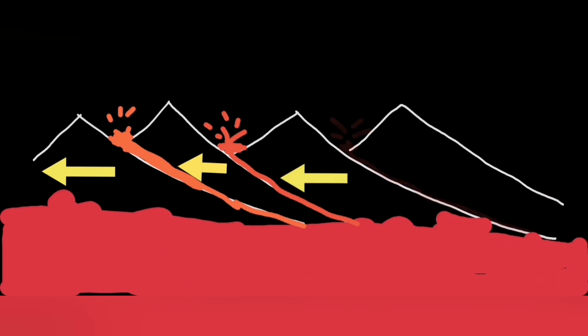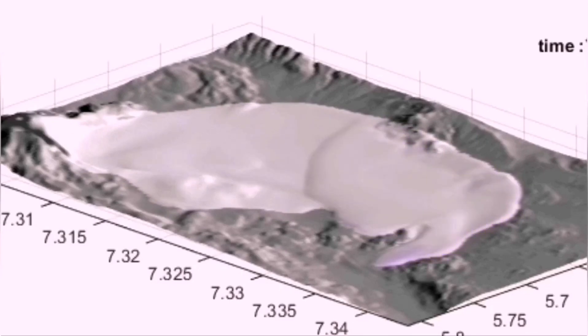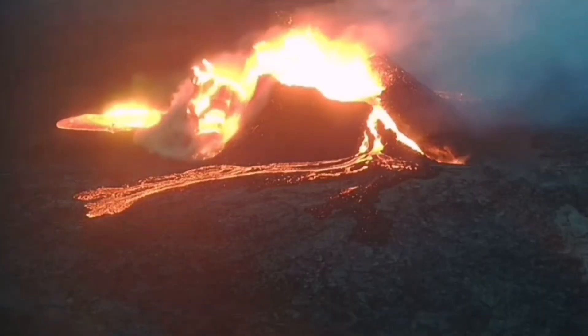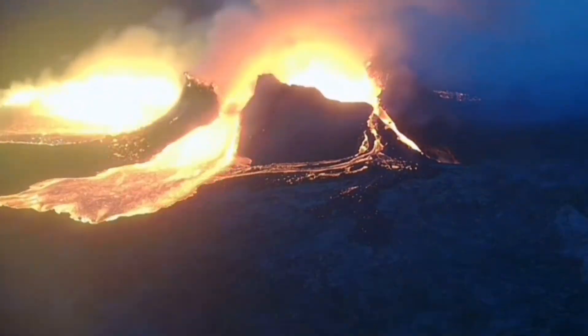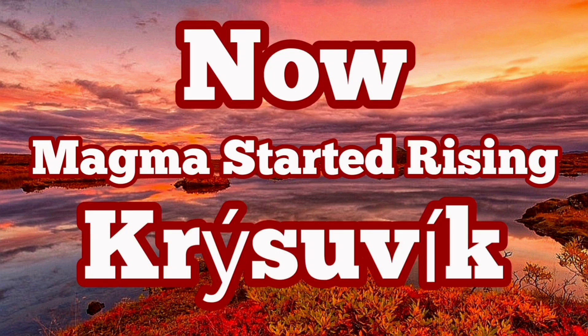This is a scary situation because the Swartzengi Blue Lagoon Grindelbeek volcanic system is now active. And the magma movement in that direction can actually increase the chances of the risk to the buildings and the structures in the vicinity of those areas, including Reykjavik, the capital of Iceland.